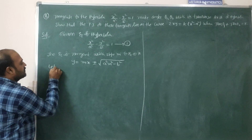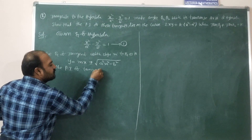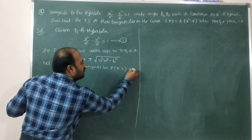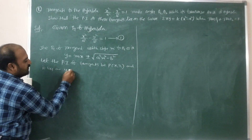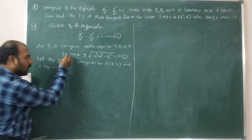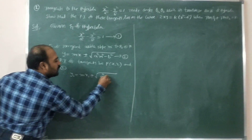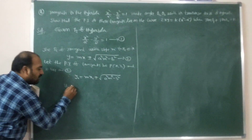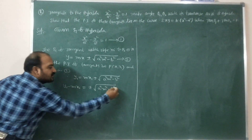Let the point of intersection of tangents be P(x₁, y₁), and it lies on y = mx ± √(a²m² - b²). Therefore, y₁ = mx₁ ± √(a²m² - b²). Taking mx₁ to the other side: y₁ - mx₁ = ± √(a²m² - b²).